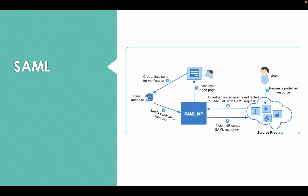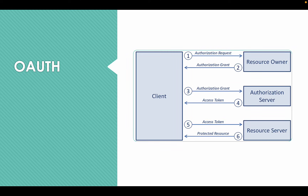SAML simplifies password management and enables SSO, which helps enterprises because employees are using more and more applications. As you can see on the screen, the user makes a request to a resource, which is a service provider. The service provider then redirects the user to a SAML login page where they input their username and password. The SAML identity provider communicates with the back-end user database where the user credentials are stored. Once verification takes place, the SAML identity provider sends a SAML response to the service provider and the user is authenticated.